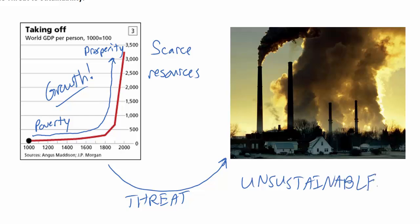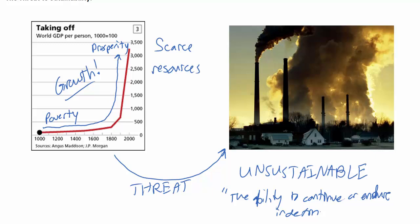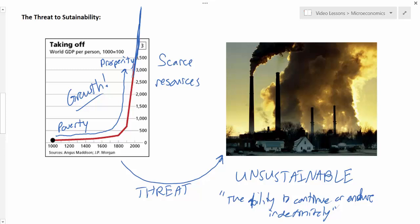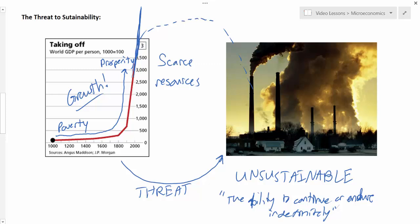The threat is that the growth we have enjoyed over the last thousand years is unsustainable. My favorite definition of sustainability is the ability to continue or endure indefinitely. Sustainability is what's necessary for human society to exist on the planet for another thousand years. Is this rate of economic growth — requiring the production and consumption of goods that use non-renewable resources — sustainable? Or is there a level at which humans will plateau, and possibly experience a fall in incomes in the future?